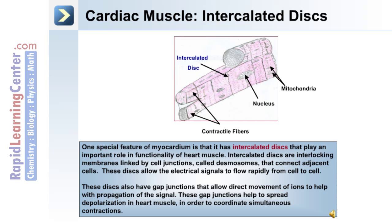They allow the electrical signals to flow rapidly from cell to cell. They also have gap junctions that allow direct movement of ions to help with the propagation of the signal. The gap junctions help to spread depolarization in the heart muscle in order to coordinate simultaneous contractions.